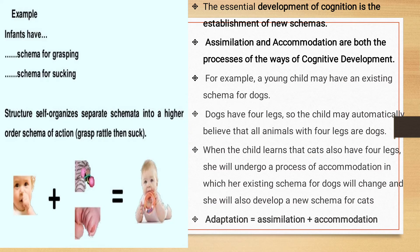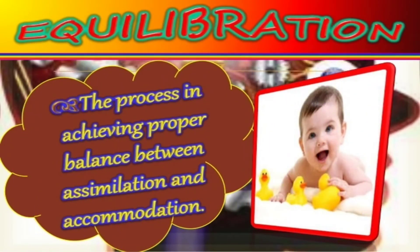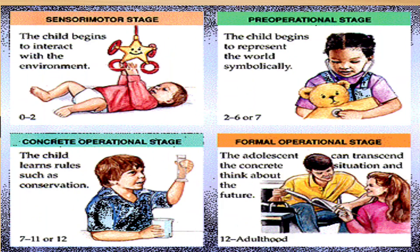Adaptation occurs when assimilation and accommodation proceed together. Assimilation is the process of fitting new experiences into a previously existing schema. For example, once a child learns that fruit tastes sweet, when given a bitter fruit or one with seeds they start accommodating the new information, modifying their schemas. Equilibration is the process of achieving a proper balance between assimilation and accommodation.